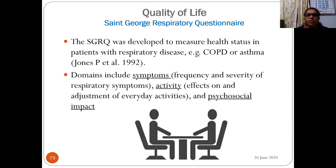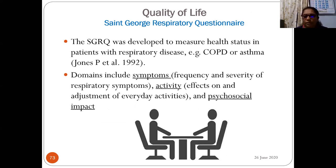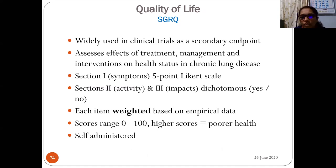The St. George's Respiratory Questionnaire (SGRQ) was developed to measure health status in patients with respiratory disease such as COPD or asthma. A COPD-specific modified version (SGRQ-C) is also available. Three domains: symptoms (frequency and severity of respiratory symptoms), activity (effects on daily activities), and psychosocial impact. It is widely used in clinical trials as a secondary endpoint for treatment and intervention effects. Section one uses a five-point Likert scale; scores range from 0 to 100, with higher scores indicating worse health. It is a self-administered questionnaire.